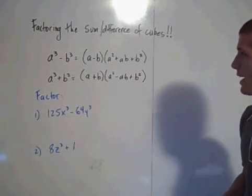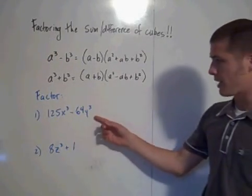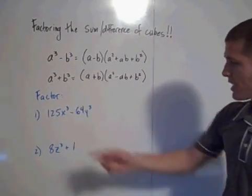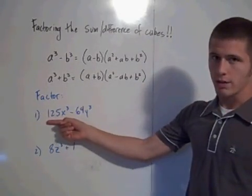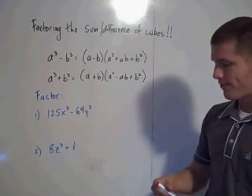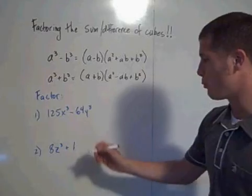So how do you factor the difference of cubes? Well, here's an example of two perfect cubes. For this one, you have to decide what's being cubed here and what's being cubed here. That's going to find your a values and your b values respectively.